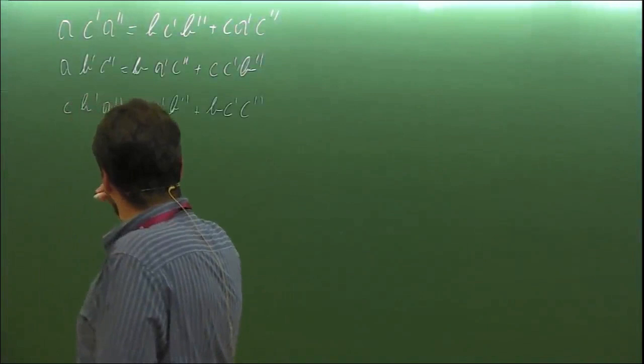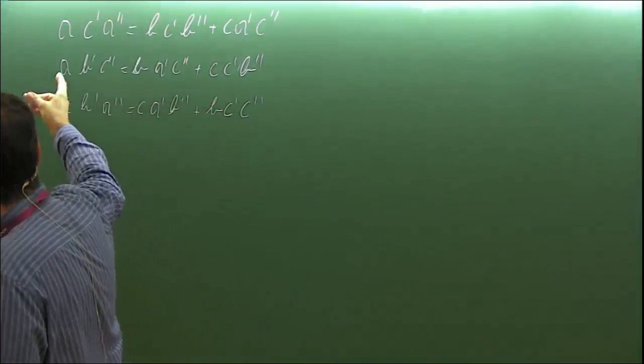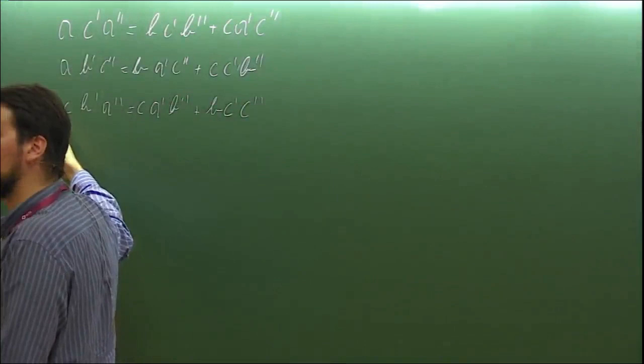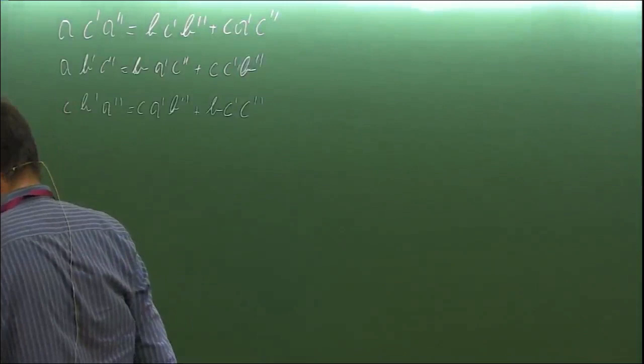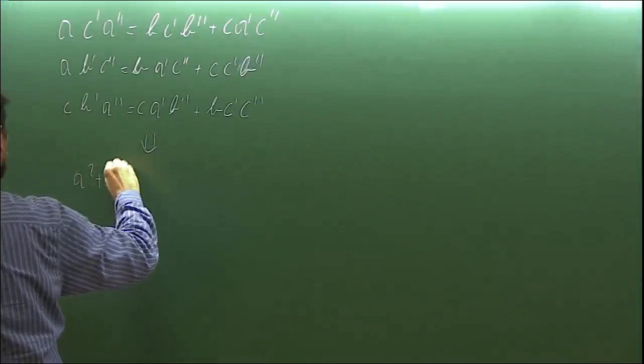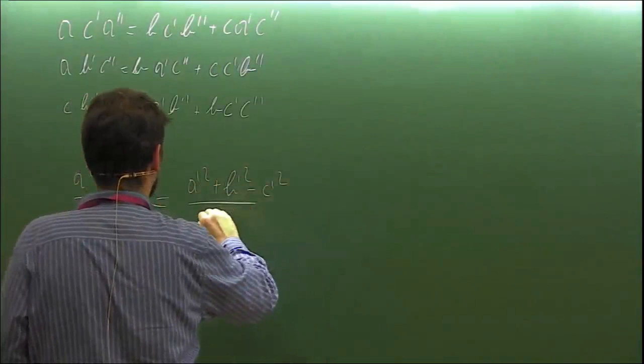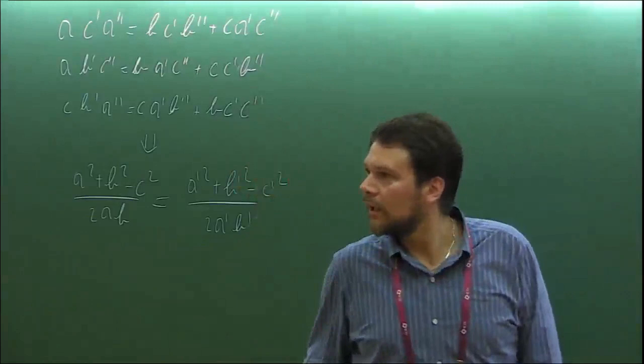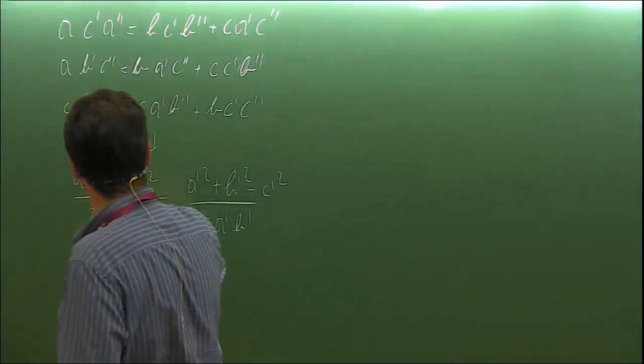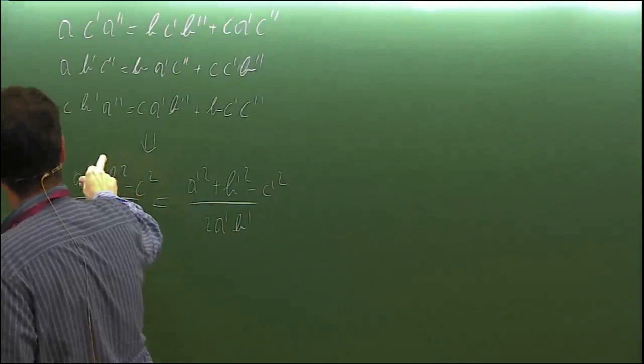What you're really interested in is finding the prime system that commutes with the unprimed one. You can use these equations to eliminate the double-prime variables. In doing so, you find that (a² + b² - c²) / 2ab must equal (a'² + b'² - c'²) / 2a'b'. By eliminating the double primes, if both systems share this same quantity, they commute.